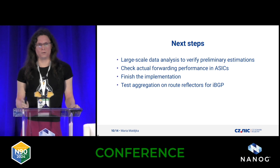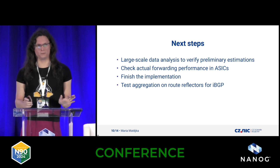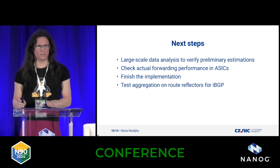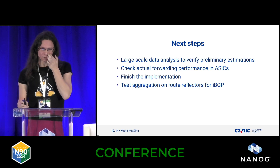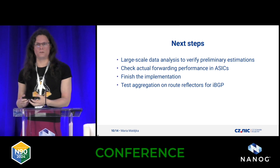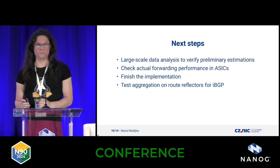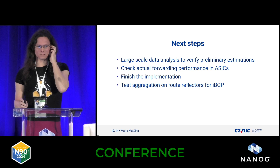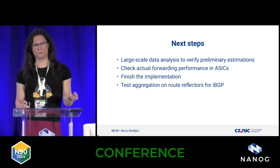What to do next? We'd like to have much more data — we have just a little bit. I did fast research, nothing really big, but everything I got was quite the same: all of it was aggregating down to those numbers I showed. We also want to check actual forwarding performance — whether it makes a difference whether you feed your ASIC with a million routes or 200,000 routes. We also have to finish the implementation in BIRD to make it commercially available, and we'd like to test whether it's possible to aggregate on route reflectors to feed your internal network routers with an aggregated table.